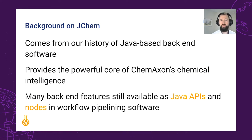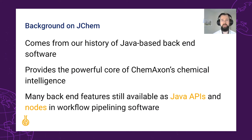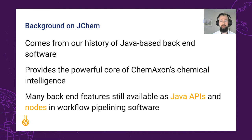To save us all a lot of repetition throughout this talk, if you see a functionality that you would like to integrate as a back-end feature, as well as the distributions I will explicitly mention for each product, it's highly likely that it's also available as a Java API. Similarly, most of our toolkits and back-end functionalities can also be accessed as nodes in KNIME or Pipeline Pilot, making their inclusion into your existing workflow straightforward.